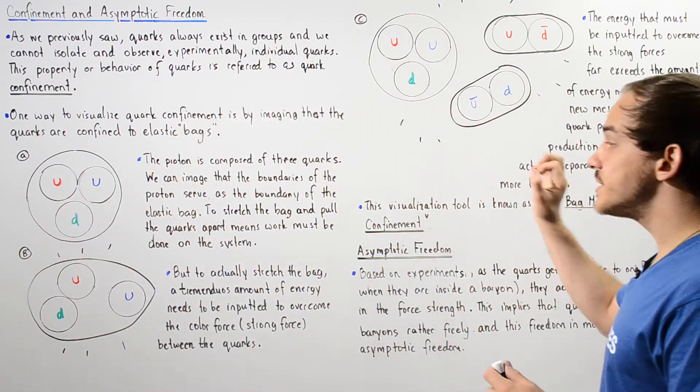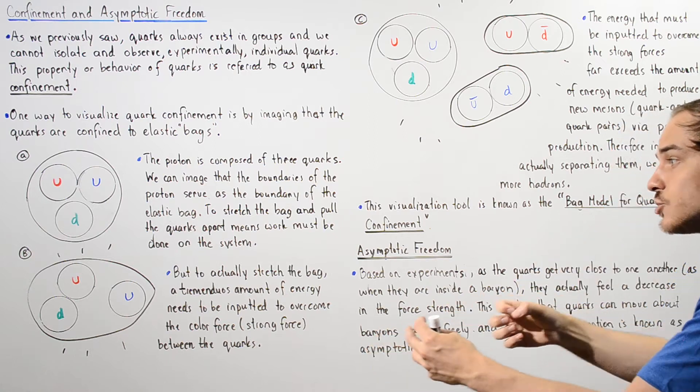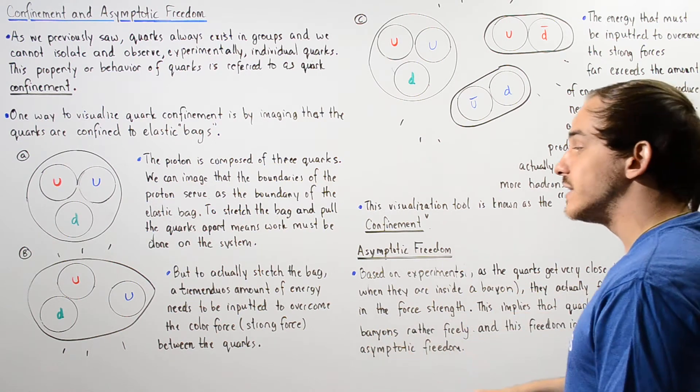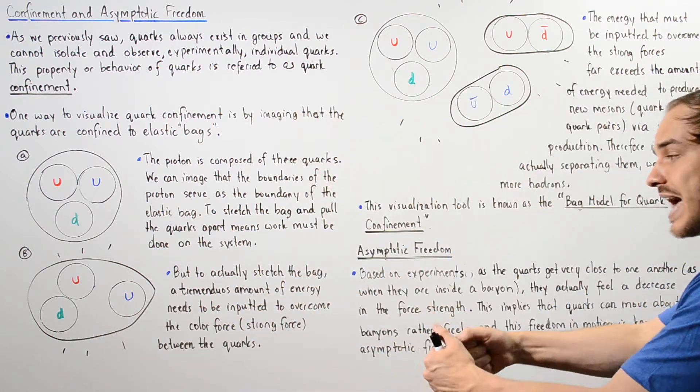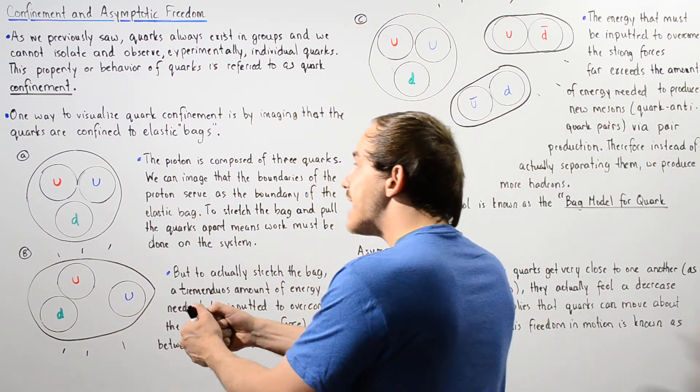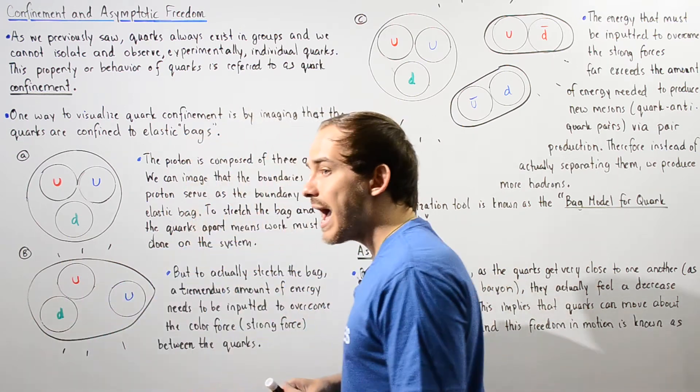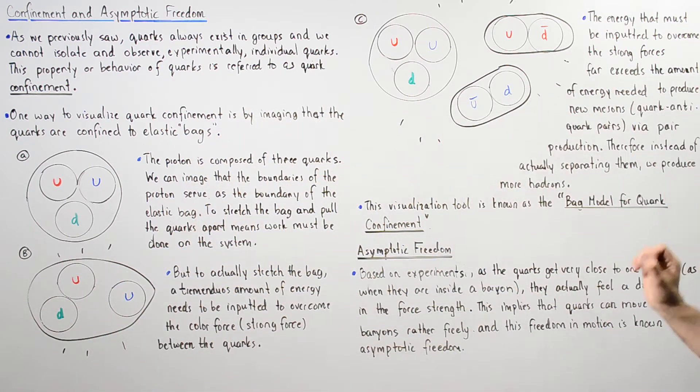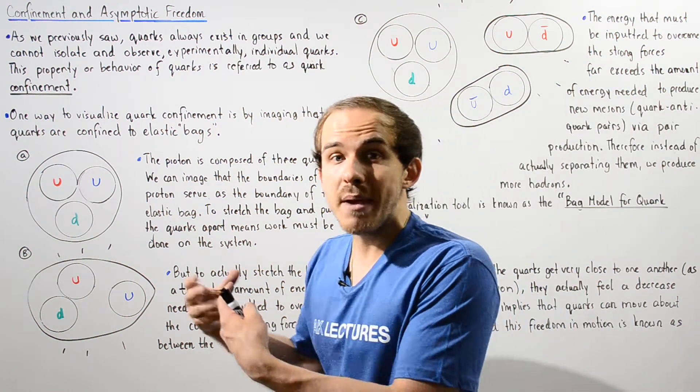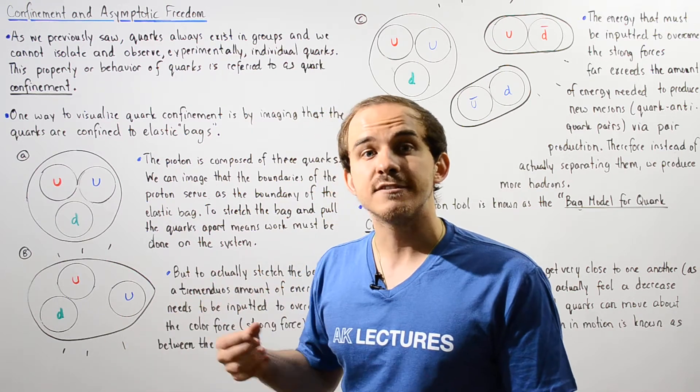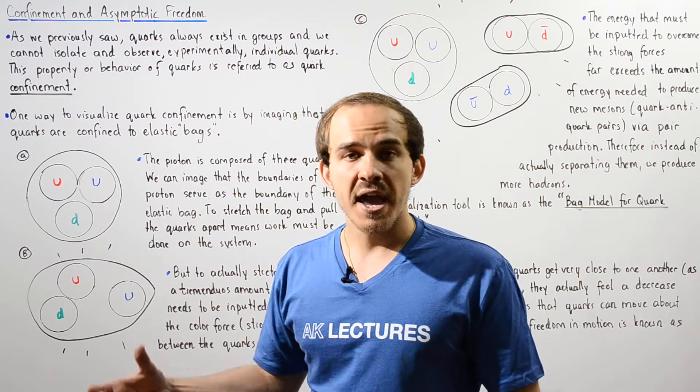When we actually input that tremendous amount of energy, the amount of energy that we input to actually separate and stretch our elastic bag ends up exceeding the amount of energy that is needed to actually form new mesons and baryons via the process of pair production.